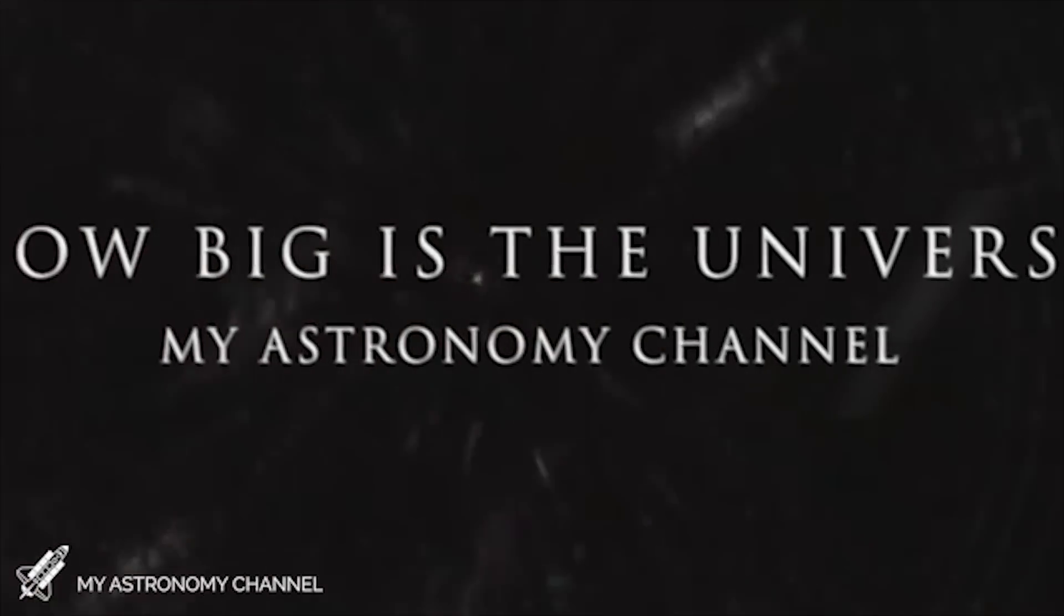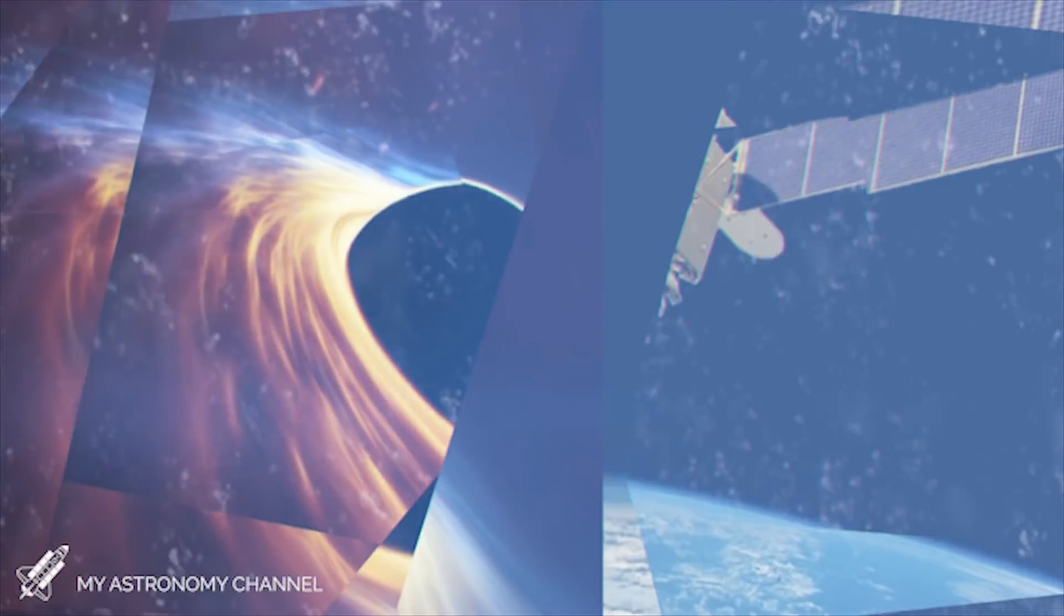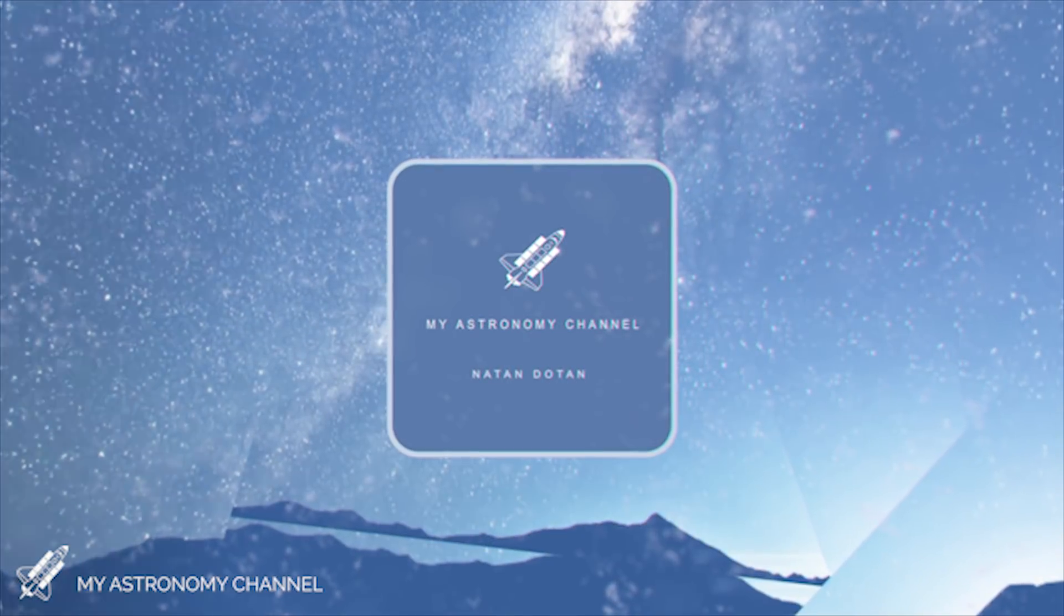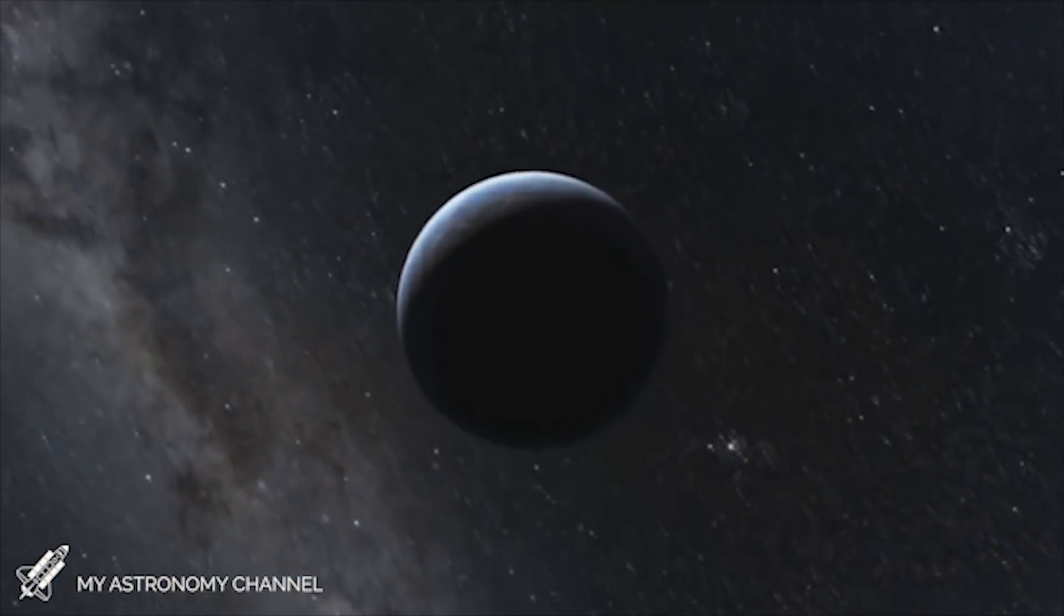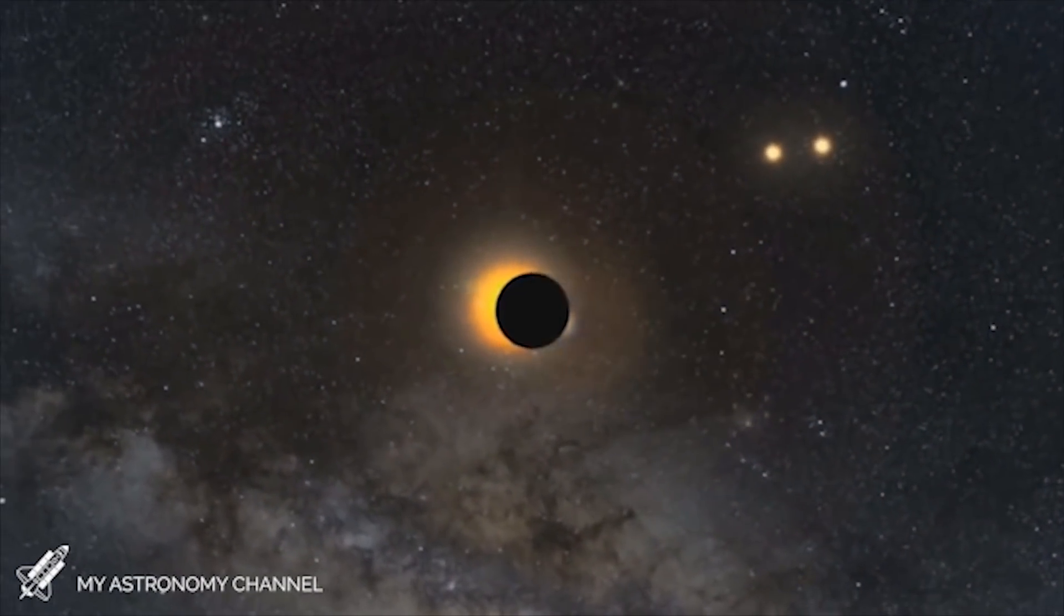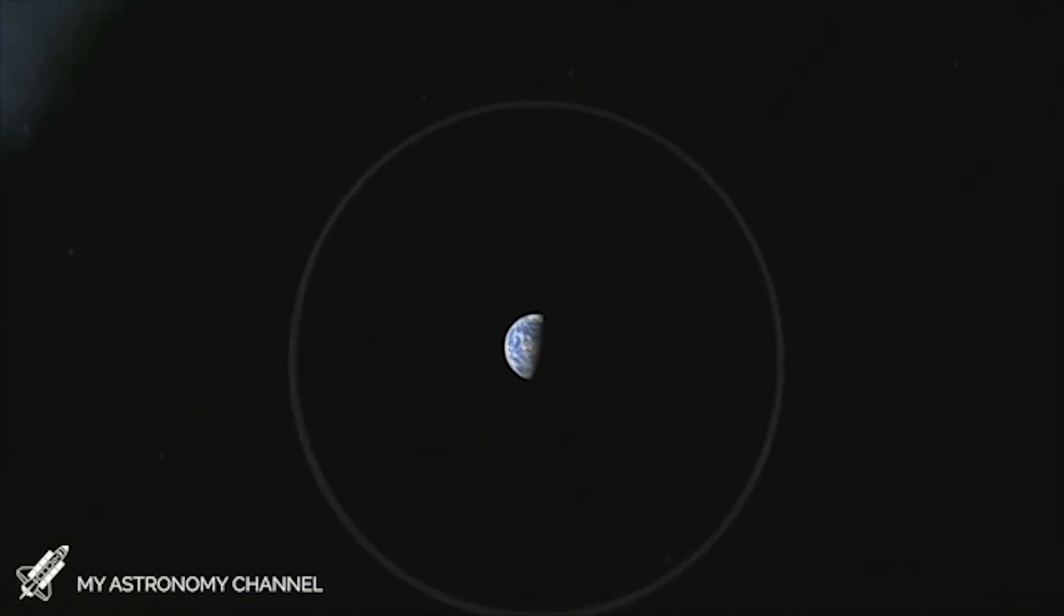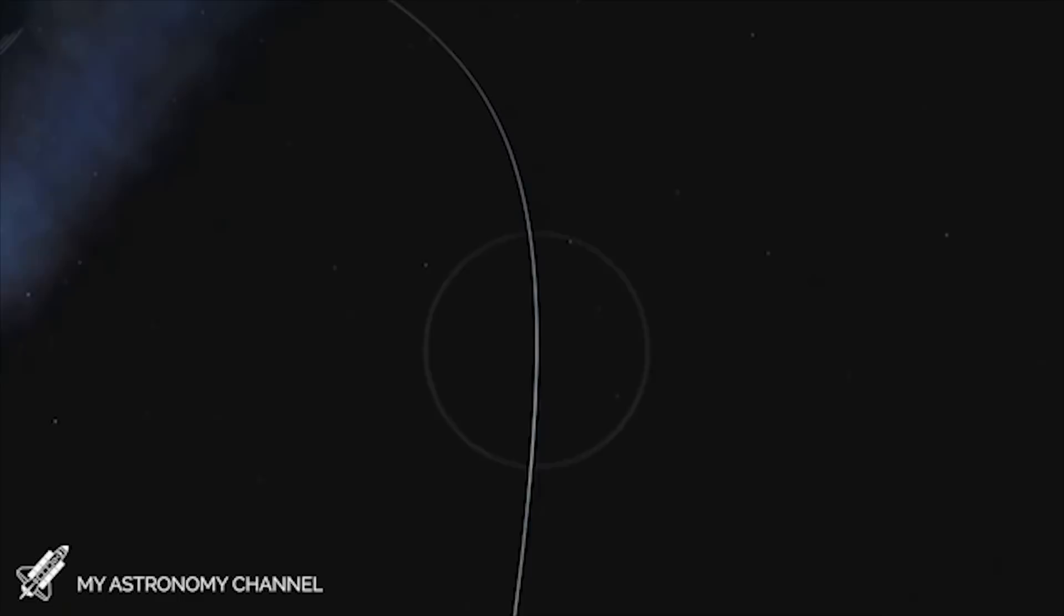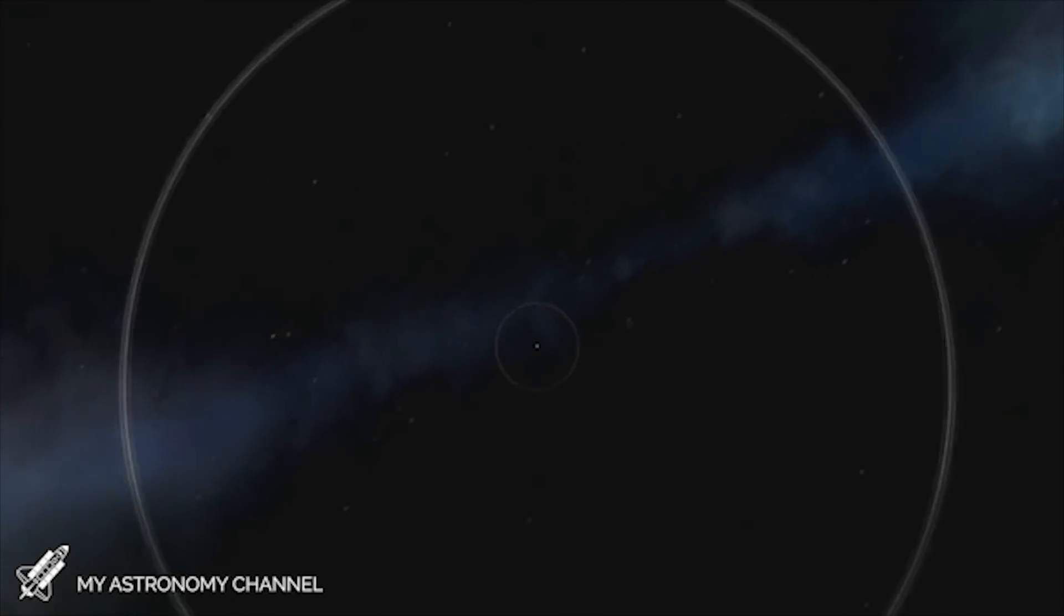This video is brought to you by My Astronomy Channel. Our brains struggle to comprehend how big the universe is because everything here on Earth, and even the Earth itself, is very small when compared to the immense scale of the universe. So let's think about it a different way, using something we see and interact with every day: light.